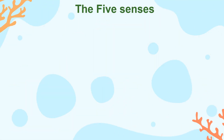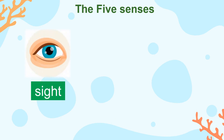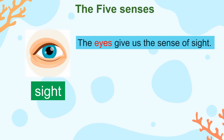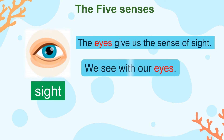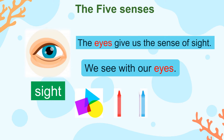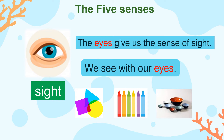Next, let's learn more about each one of the five senses. Sight — the eyes give us the sense of sight. We see with our eyes. We are able to see shapes, colors, and the size of the objects around us.